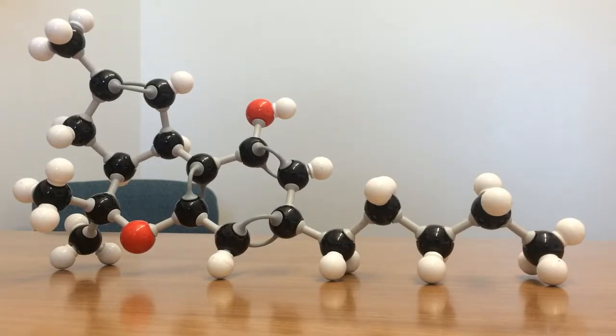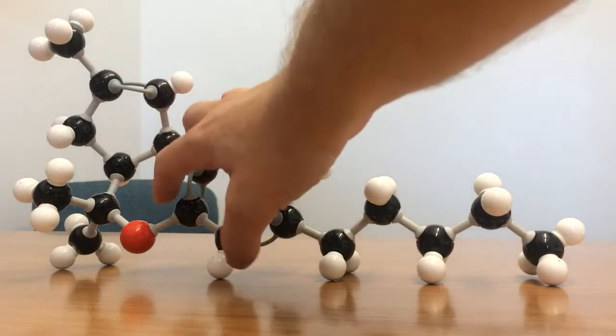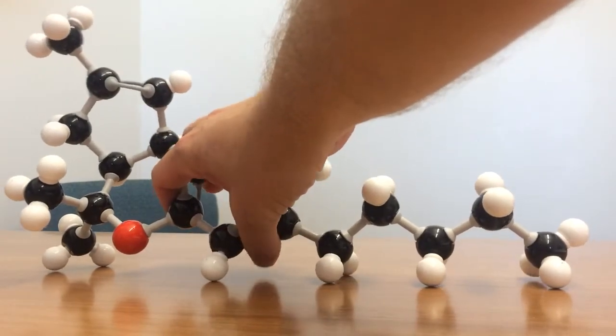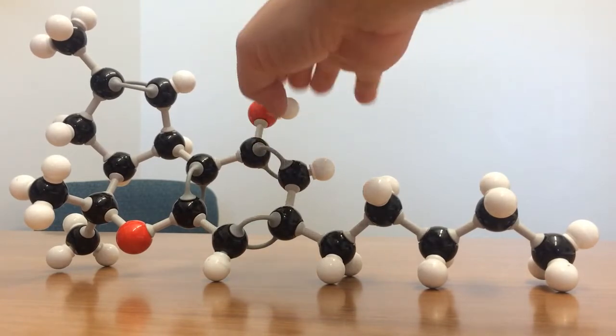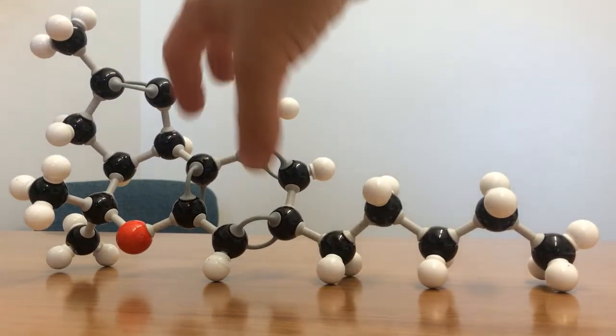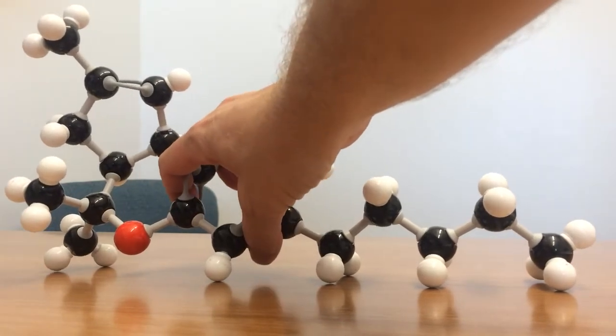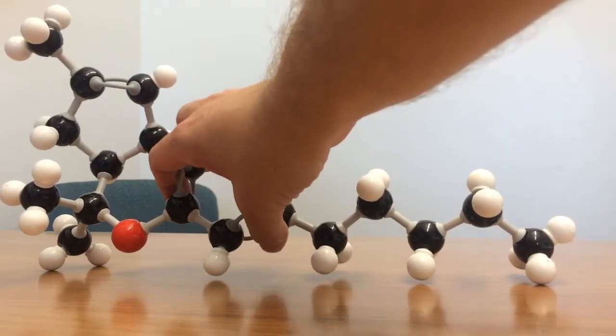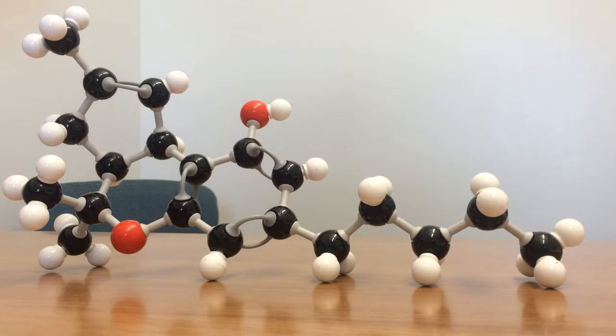We'll talk about the receptors that these molecules act as a ligand for, with the understanding of the phenolic group here, this phenolic group, the benzene ring, the hydroxyl group, tends to have a significant amount of activity. So this molecule acts as a ligand for the cannabinoid receptors.